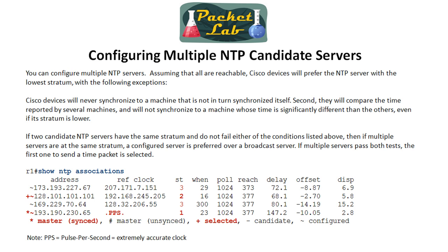Just throw in a bunch of different servers and you'll have redundancy. The interesting bit here is the process Cisco devices use to choose an NTP master. By default it chooses the most accurate clock based on stratum — the lowest stratum available. One exception: Cisco will never synchronize to a machine that is not itself synchronized. So if a stratum 1 server loses its mind and thinks it's 1993 and is unsynchronized, the Cisco device is smart enough to say 'that thing isn't synchronized, I don't want time from it — let's go to our next choice.'